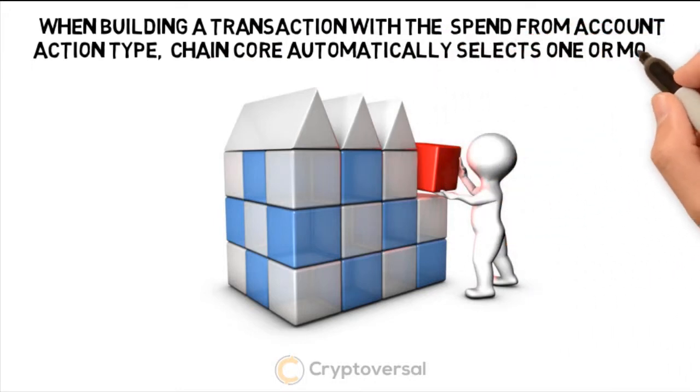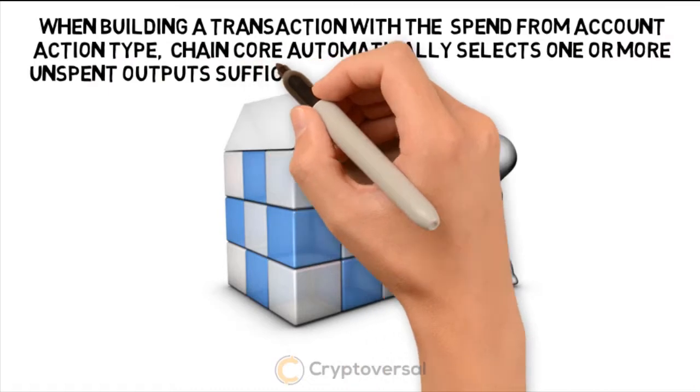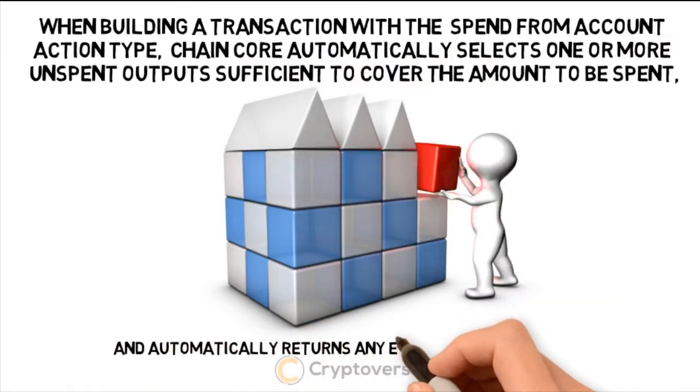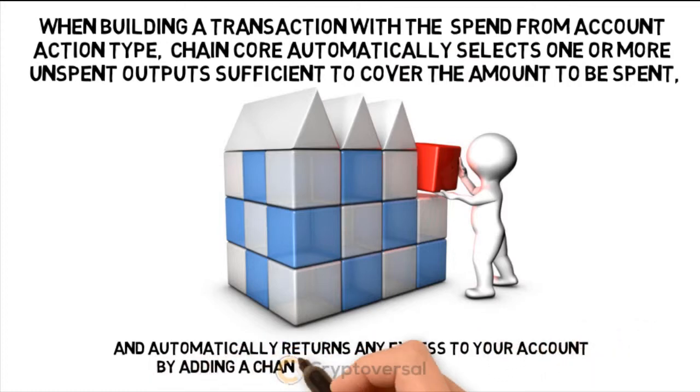When building a transaction with the Spend from Account action type, Chain Core automatically selects one or more unspent outputs sufficient to cover the amount to be spent, and automatically returns any excess to your account by adding a change output to the transaction.